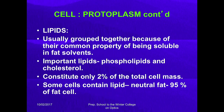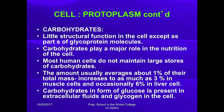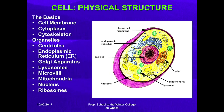Lipids are grouped together because of their common property of being soluble in fat solvents but not in water. Important lipids are phospholipids and cholesterol, constituting only 2 percent of total cell mass. Some cells contain neutral fat that is almost 95 percent of fat cells. Carbohydrates are in the form of glucose present in extracellular fluids, and glycogen is another form of carbohydrates present in the cell.